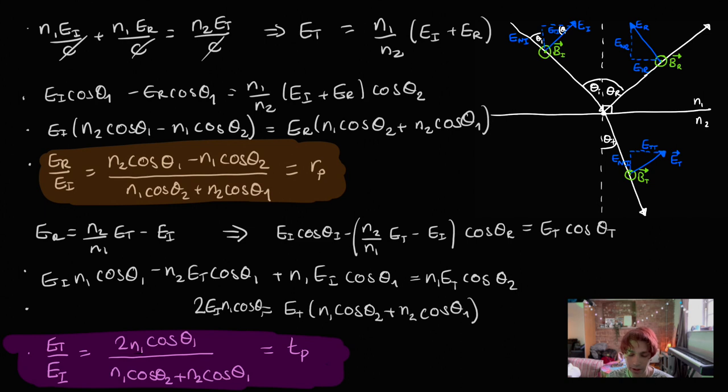We now have four equations: two describing transverse electric (S-polarized) light and two describing transverse magnetic (P-polarized) light. That was a lot of work, but hopefully you managed to follow along with all that algebra. In the next video, we're going to be doing a slightly less algebraically intense analysis — looking at the consequences of the four Fresnel equations and some special cases, because this is what gives rise to some quite cool optical effects.